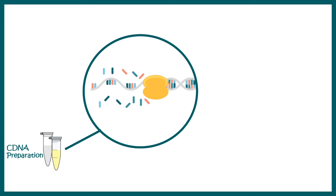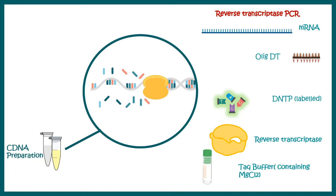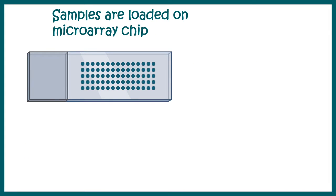This RNA would be converted to cDNA by performing a reverse transcriptase PCR. If you don't know what reverse transcriptase PCR is, you can check it in the i button. Then ultimately these cDNA samples are loaded on these microarray chips.